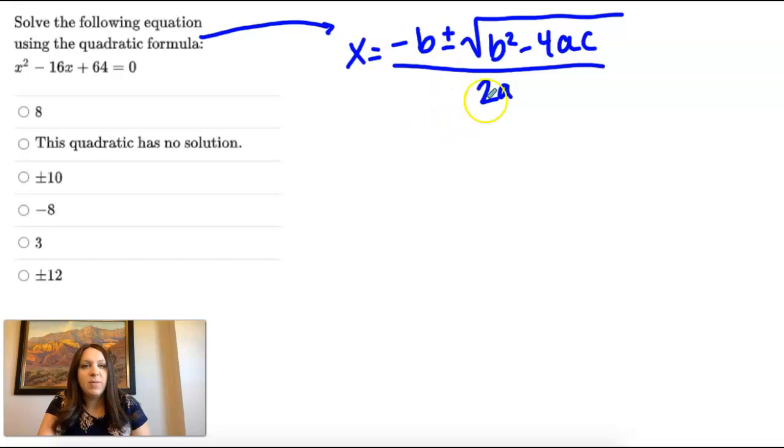So all of this a, b, c is coming from a quadratic equation in what we call standard form. So this, ax squared plus bx plus c equals zero, this is called standard form.